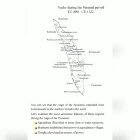Agriculture flourished in areas close to water resources. Many regions are close to water resources, so agriculture flourished in those areas. Brahmins established their power in agriculture villages. The major power was vested in the hands of Brahmins. Temples developed as centers of power.